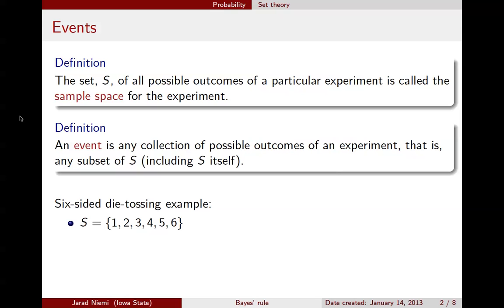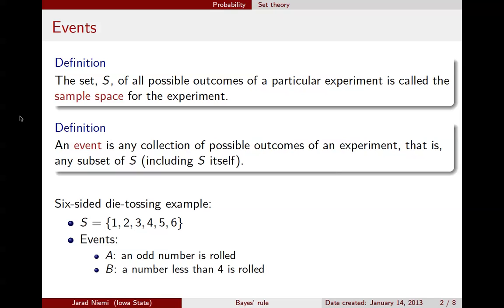Now we can list a number of events. The first is event A: A is the event that an odd number is rolled, that is, a 1, 3, or a 5 is rolled. A different event is event B, that is, a number less than 4 is rolled, that is, a 1, 2, or 3 is rolled. Finally, event C is that an integer between and inclusive of 1 and 6 is rolled, that is, the entire sample space.